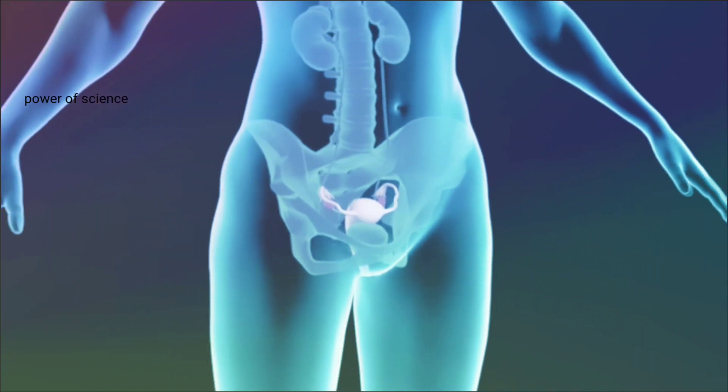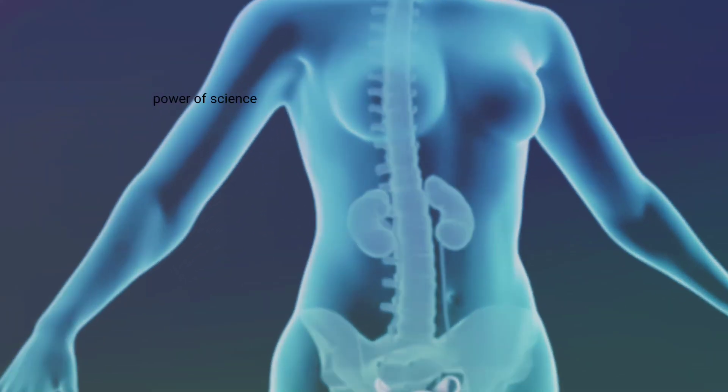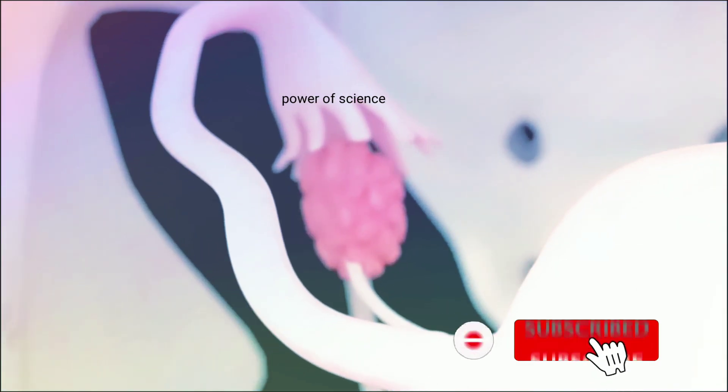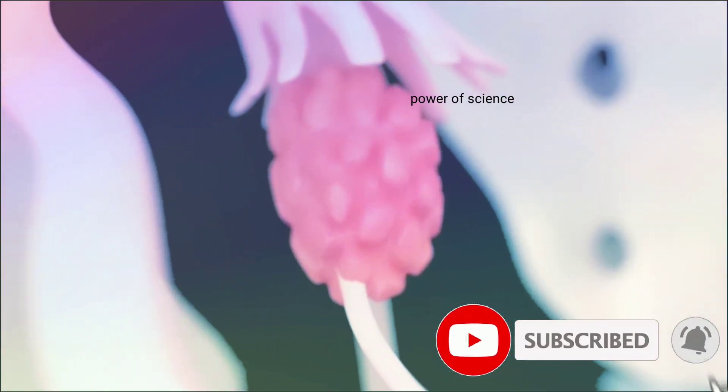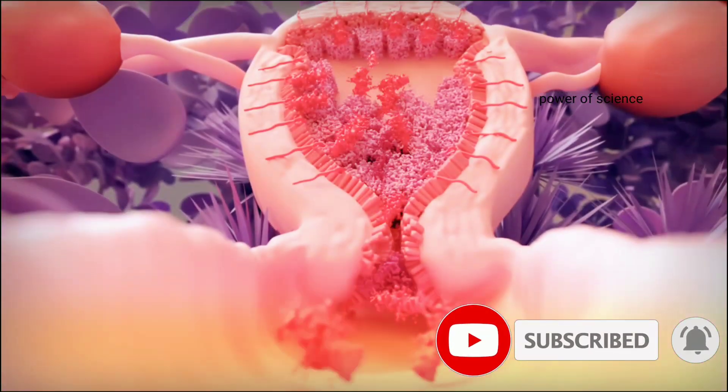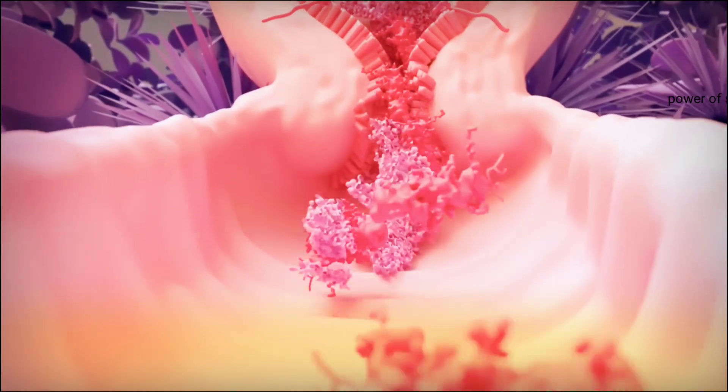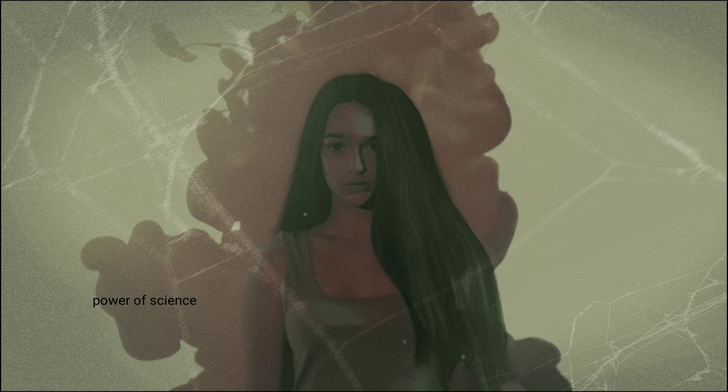The menstrual cycle refers to the monthly hormonal changes that occur in a female's body, preparing it for pregnancy. This cycle repeats every 28 to 30 days in adulthood, but some females may have shorter or longer cycles. It can vary from person to person.